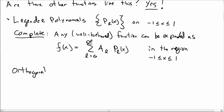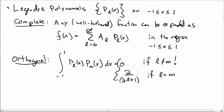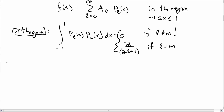Legendre polynomials are also orthogonal. If you take the integral from −1 to 1 of P_L times P_M, you get 0 if L ≠ M. If L = M, you get 2/(2L+1). So Legendre polynomials are both complete and orthogonal.